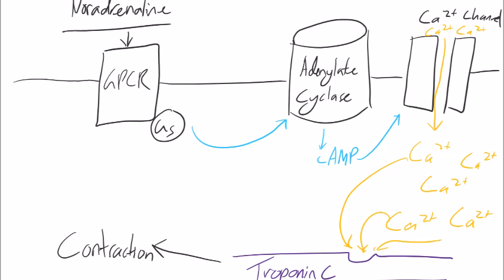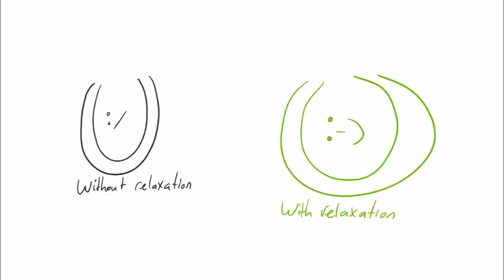Sympathetic nervous system activation is also able to increase sarcoplasmic reticulum activity, which is where intracellular calcium is sequestered and stored in between uses.